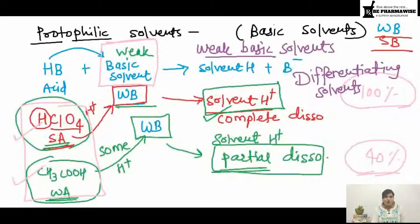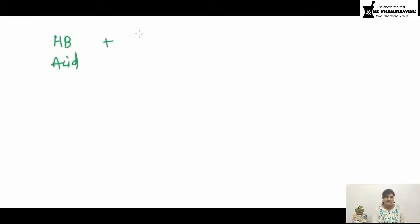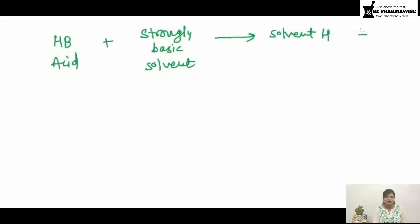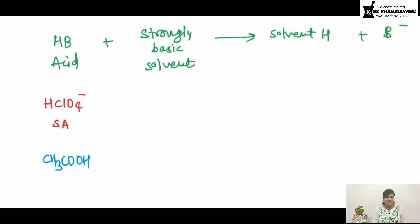Now let's understand the leveling effect. Consider the same reaction — HB is an acid — but now reacting it with a strongly basic (strong protophilic) solvent to give solvent-H+ B−. Taking the same two examples: perchloric acid (HClO4), a strong acid, and acetic acid (CH3COOH), a weak acid, let's see what happens when the strong acid reacts with a strongly basic solvent.